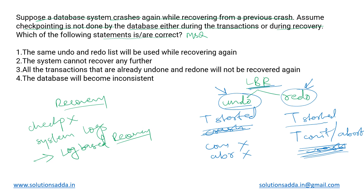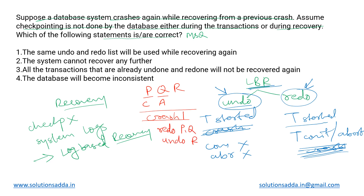Let us consider an example with three transactions P, Q, and R — all three are executing, but P has committed and Q has aborted, while R has done neither. Then Crash 1 occurs. After Crash 1, we perform log-based recovery: we redo P and Q, and undo R — because P and Q were finished using either commit or abort, and R had done neither.